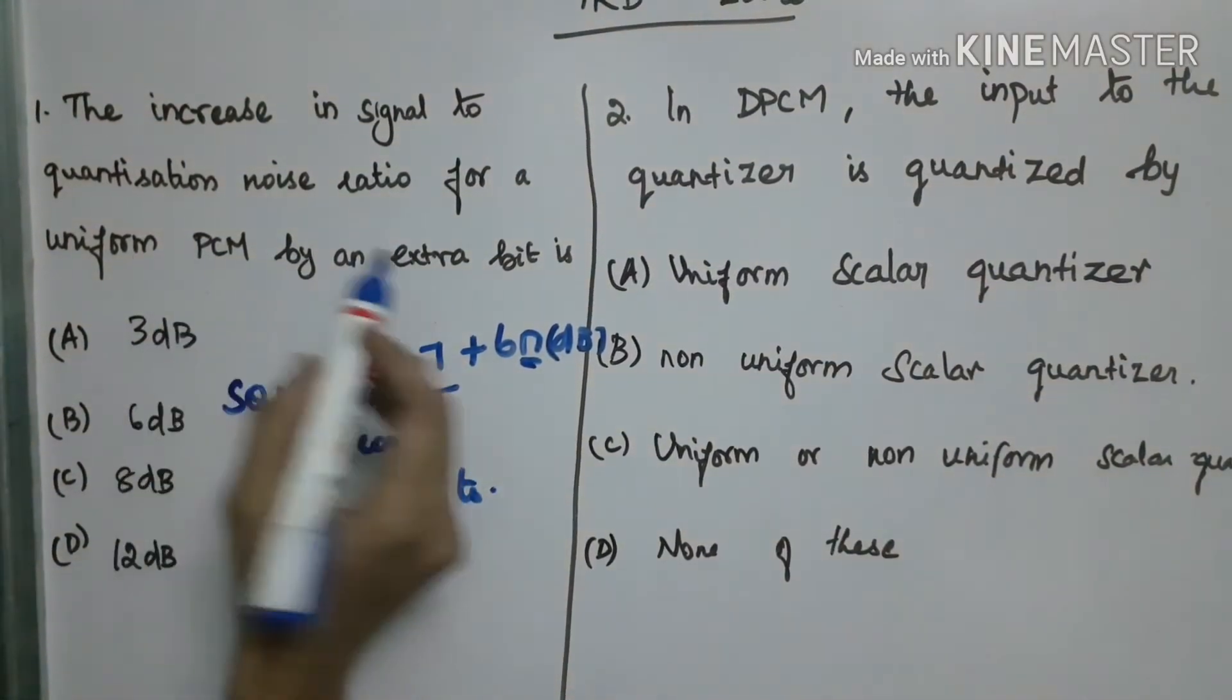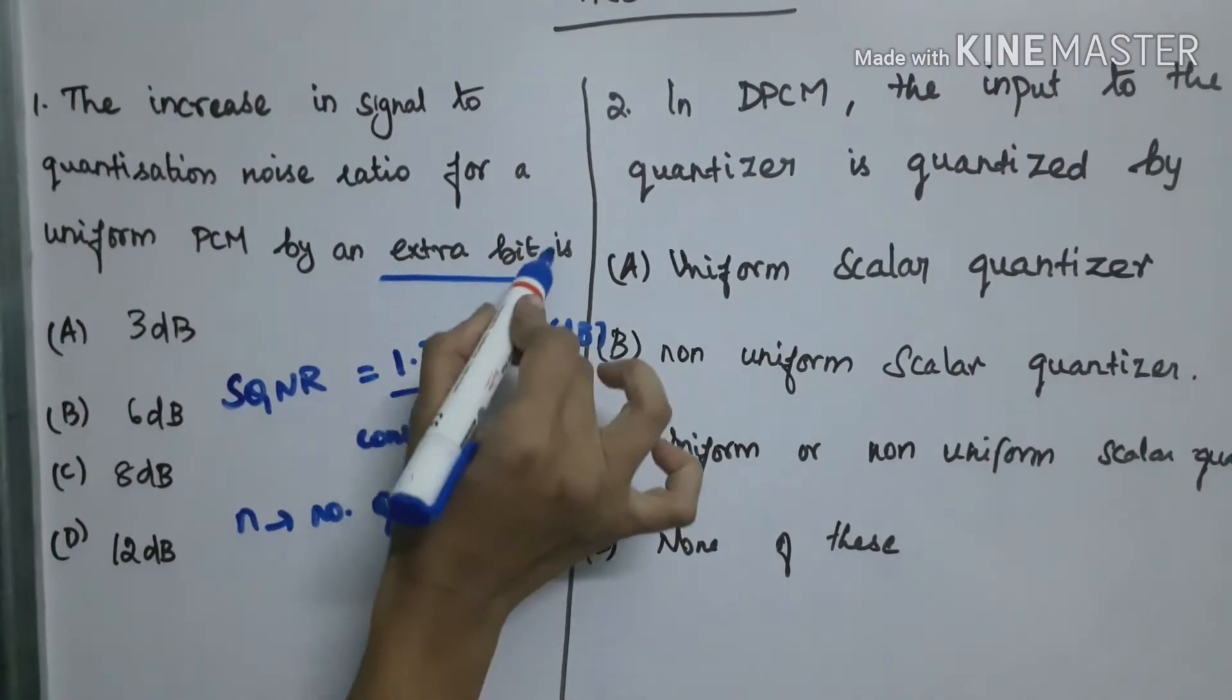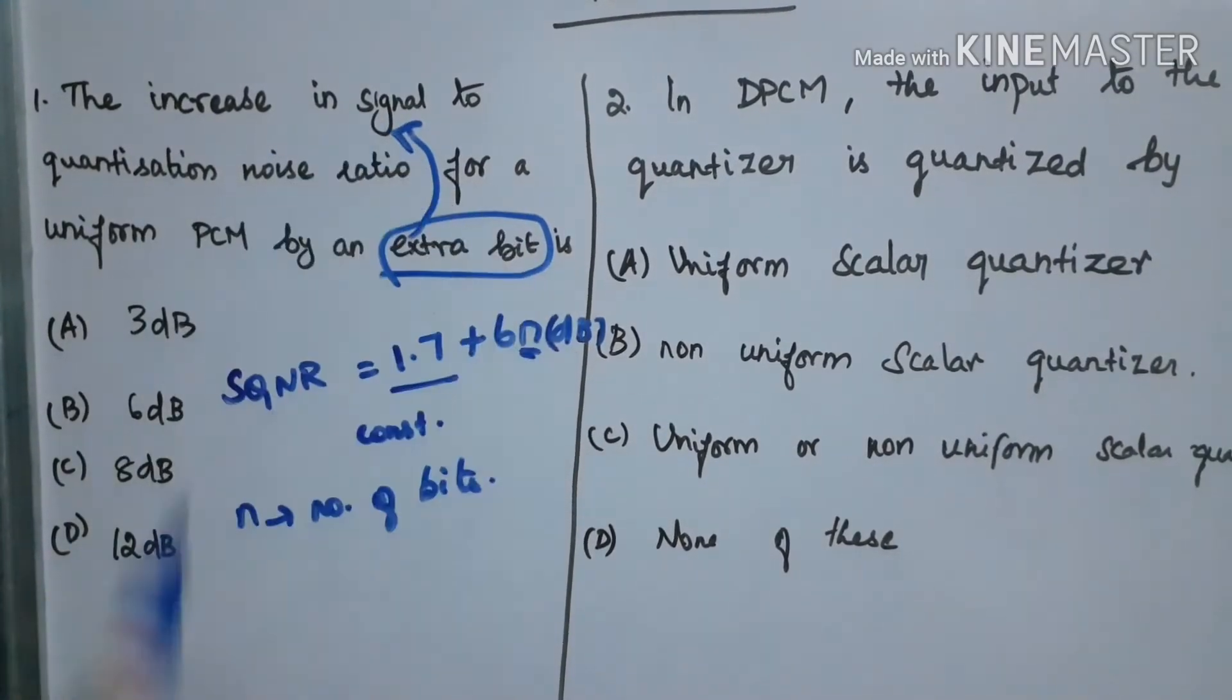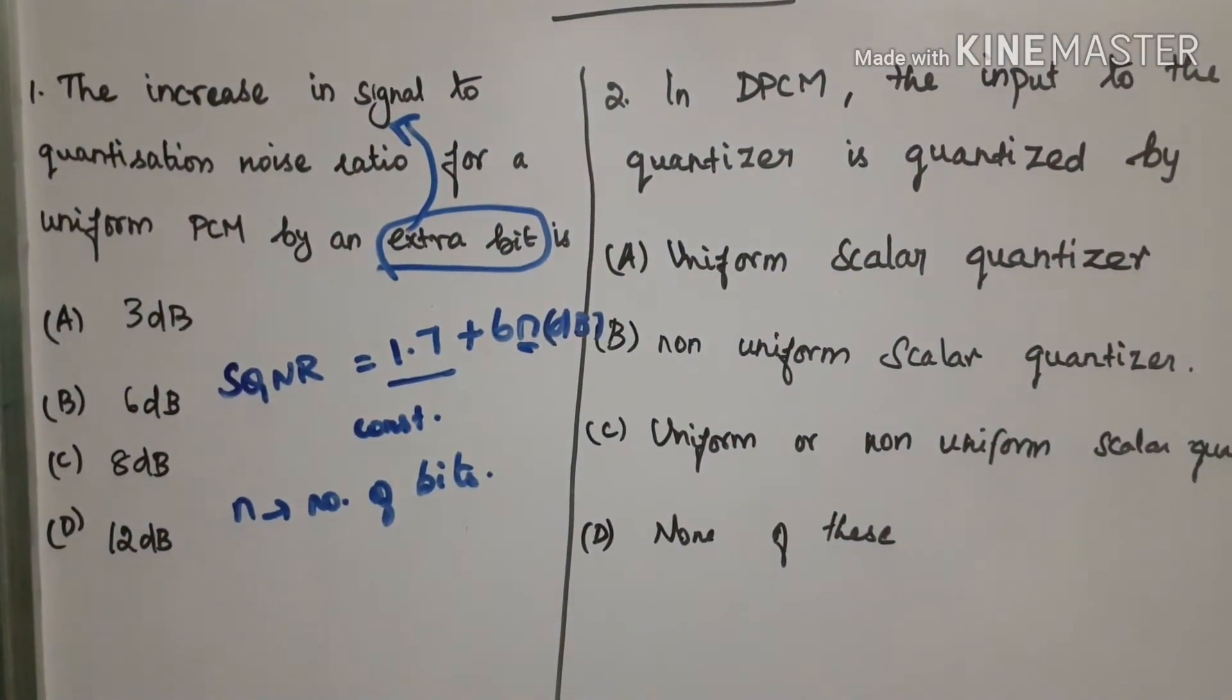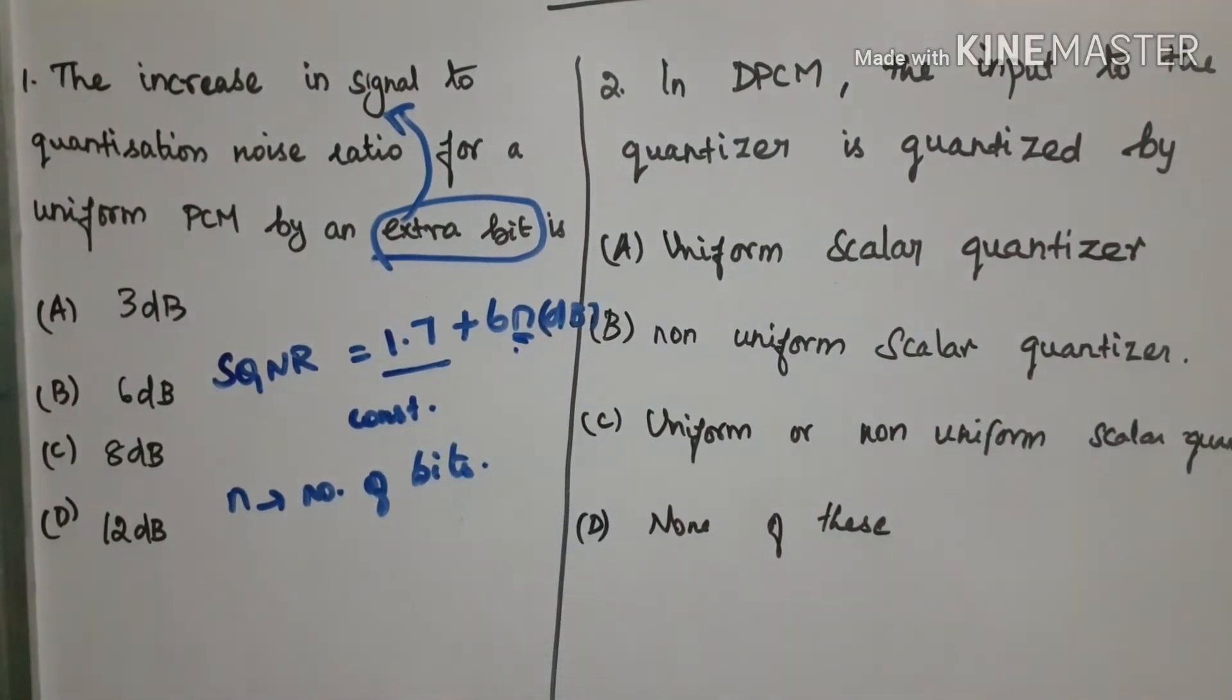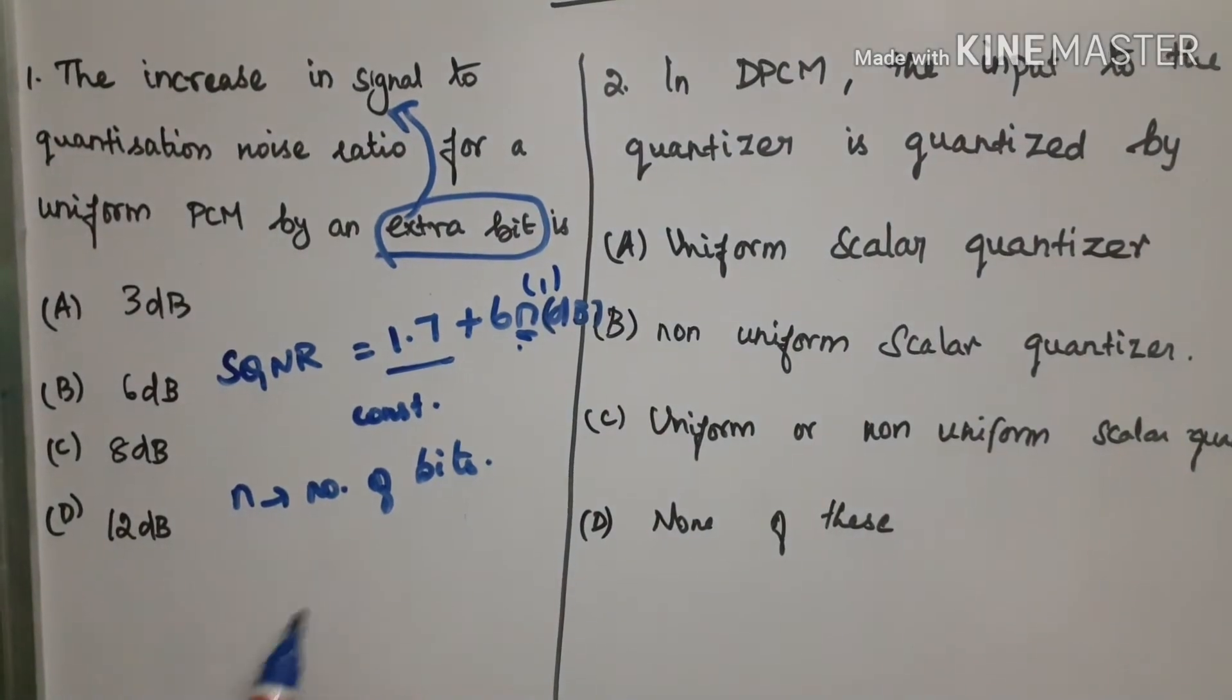See here they have given that by an extra bit how much will be increased in the signal to quantization noise ratio. This is the question they have given. This is our extra bit, that is 1 is our extra bit.